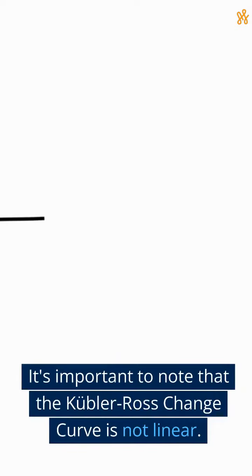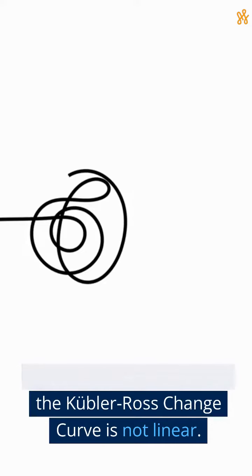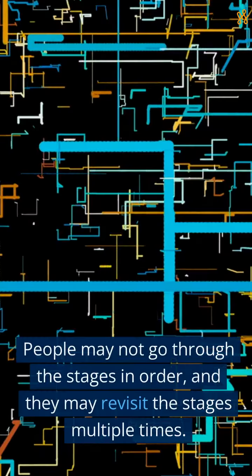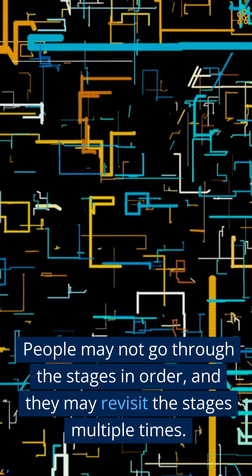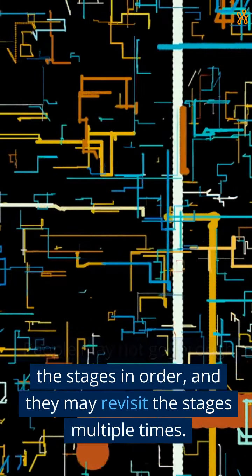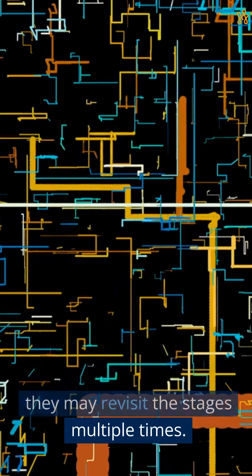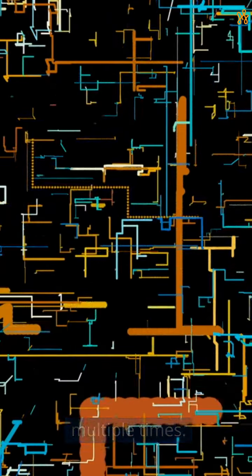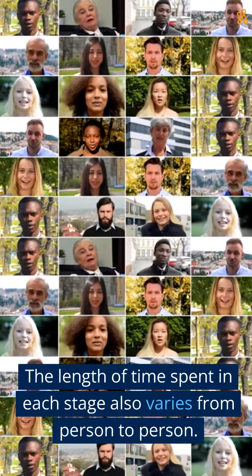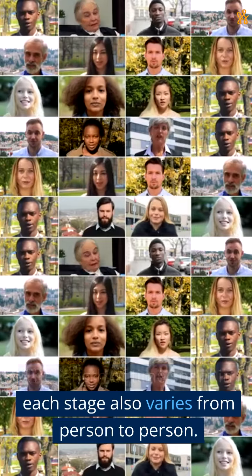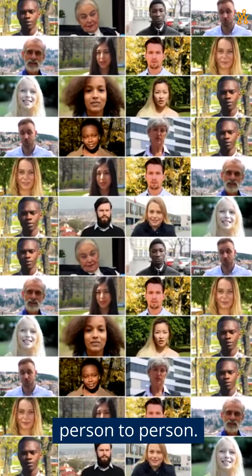It's important to note that the Kubler-Ross change curve is not linear. People may not go through the stages in order, and they may revisit the stages multiple times. The length of time spent in each stage also varies from person to person.